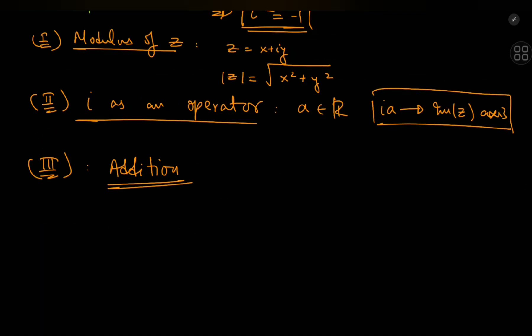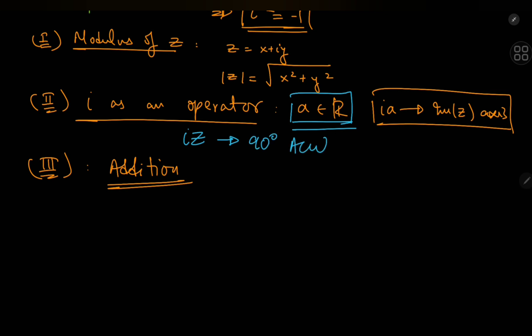Although I used a real number to demonstrate how i rotates vectors in the complex plane, such rotation can be demonstrated using any arbitrary complex number z. If you multiply i with z, you'll end up rotating z 90 degrees anti-clockwise about the origin, using complex number multiplication that we'll demonstrate later on in the video.